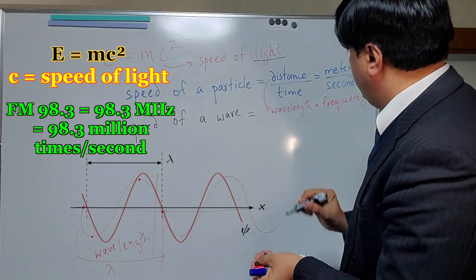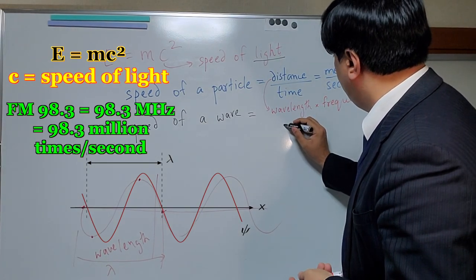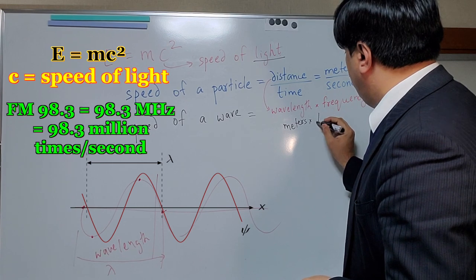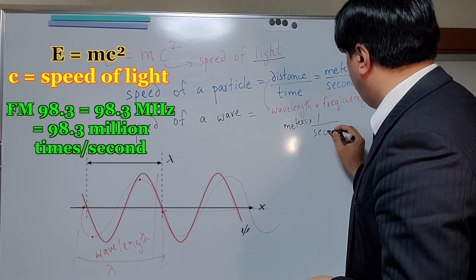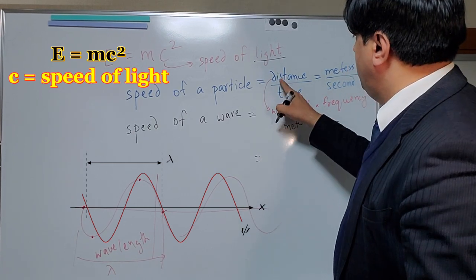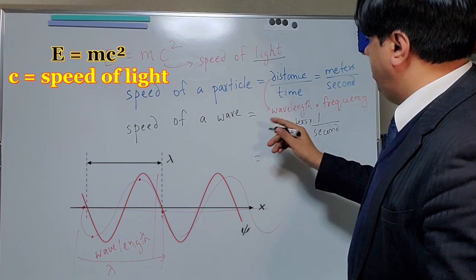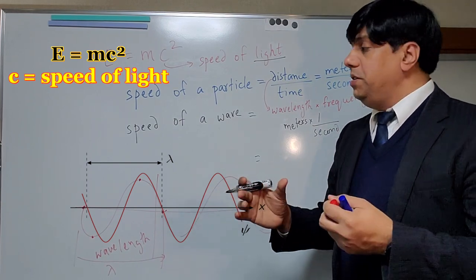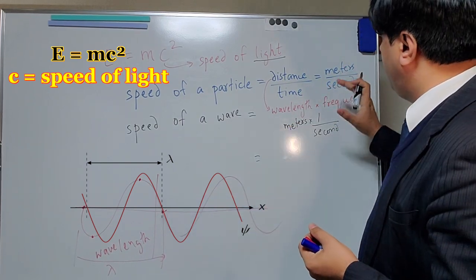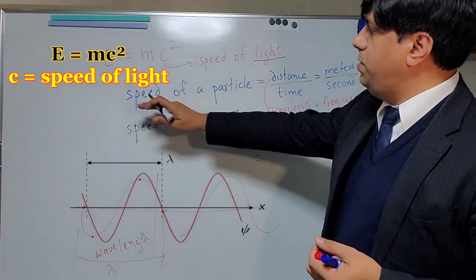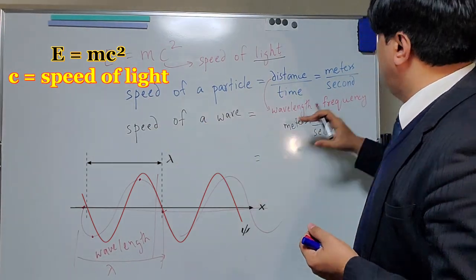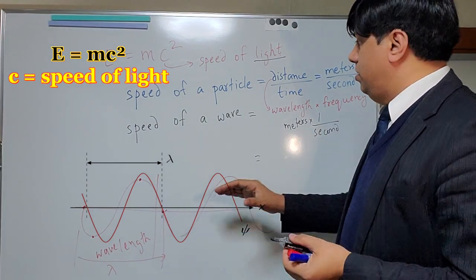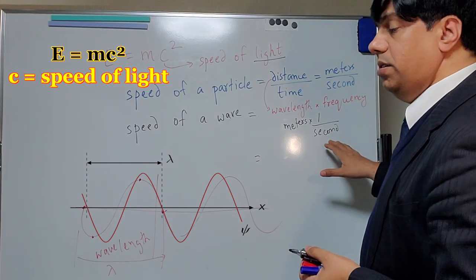Wavelength times frequency. For example, your favorite FM radio channel always advertises their frequency. Bay FM 98.3. Now 98.3 is actually the frequency of the Bay FM, and that means the wave of the FM station goes up and down 98.3 million times in one second. That's a mind-boggling number. But that's the speed at which microparticles work. So frequency is how many times do you repeat the cycle per second.